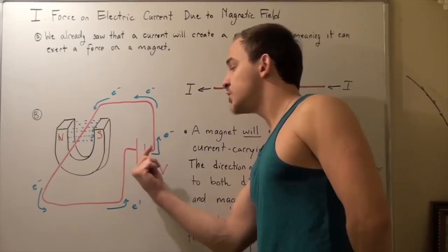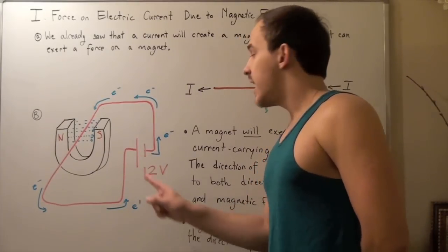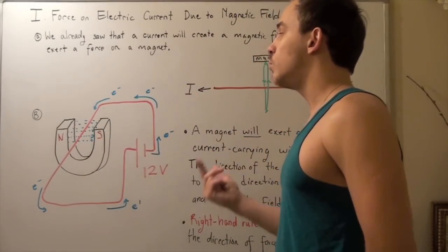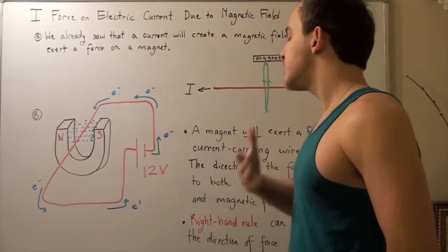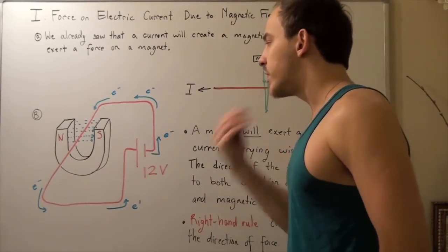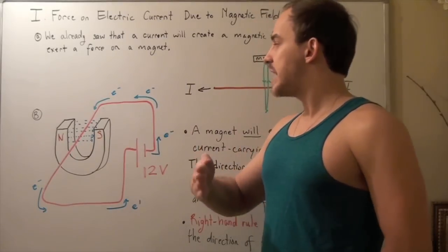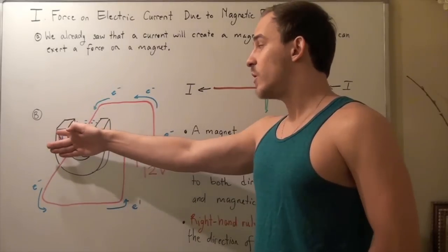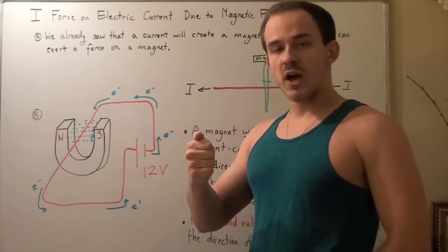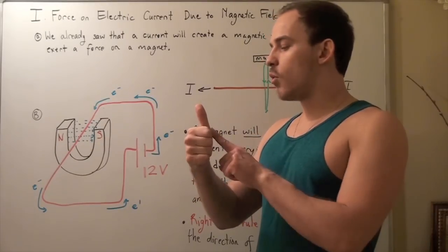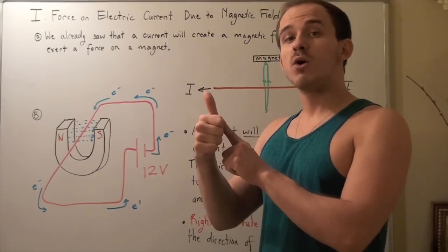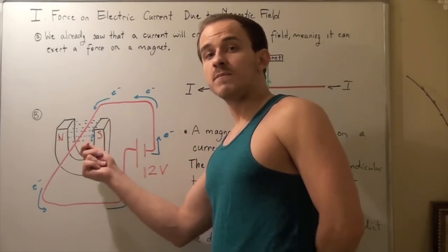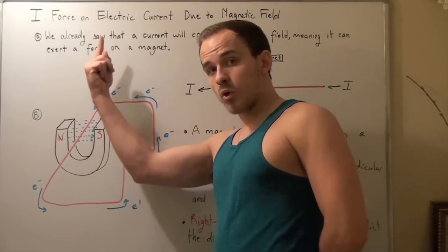Now imagine we reverse the two half-cells so that the electrons travel in the opposite direction, meaning our conventional current is now moving out of the board. Using the right-hand rule again: current is going out of the board, the magnetic field is still going from north to south, and now our thumb points upward. So when our current reverses, the force that the wire feels points upward instead of downward.